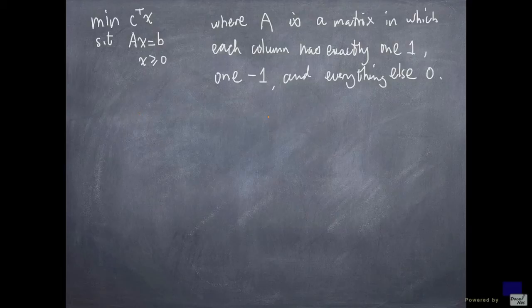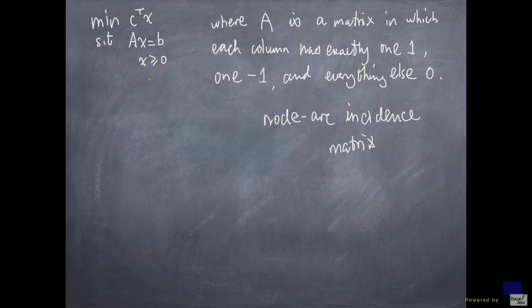Such a matrix is usually called a node-arc incidence matrix. And the reason is because we can represent such a matrix with a directed graph. A directed graph is an object consisting of nodes and arcs. And we'll look at an example, just to illustrate the concept.